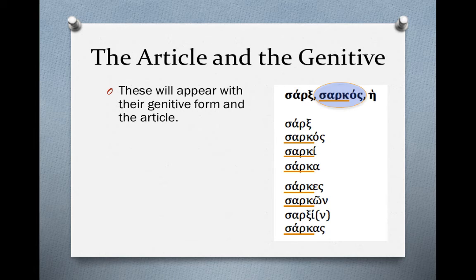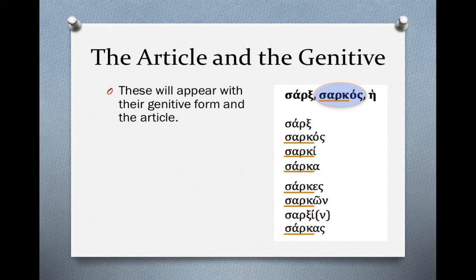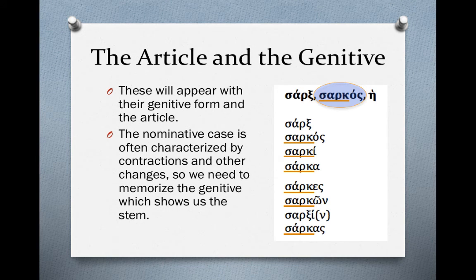Looking at all the forms of sarx, most of them have the stem underlined. The nominative singular sarx and the dative plural sarxin technically have the stem, but it doesn't appear directly — there's usually a contraction or change that makes it harder to recognize. By memorizing the genitive singular for all these third declension words, we can see what the stem looks like. Most of the time the stem appears: sarx, sarko, sarki, sarka — the kappa of the stem appears in most forms. The nominative is often characterized by contractions and other changes, so we memorize the genitive to show us the stem.